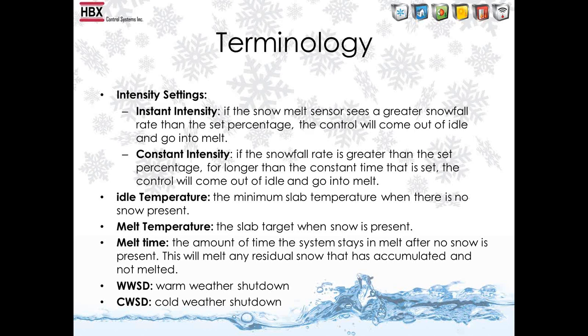Constant intensity: if the snowfall rate is greater than the set percentage for longer than the constant time set in the control, it will come out of idle and go into melt. Your idle temperature is a minimum slab temperature when there is no snow present. Your melt temperature is the slab target when snow is present. Melt time is the amount of time that the system will stay in melt after no snow is present — this will melt any snow that has accumulated and not yet melted.